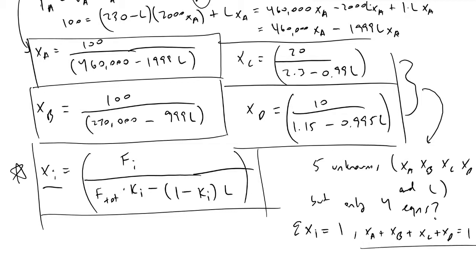What you do at this point by hand is guess a value of L, solve for all x_i's, find the sum of x_i, then check if the sum of x_i is one or approaching one.